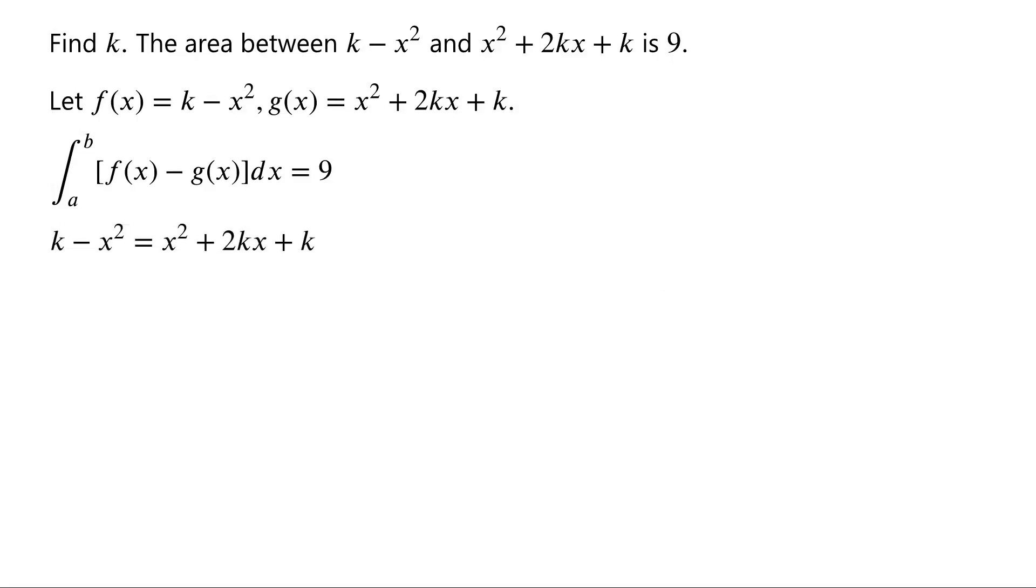That is, k minus x squared equals x squared plus 2kx plus k. k on the left hand side of the equation and that on the right hand side of the equation cancel. Rearrange the equation, we have 2x squared plus 2kx equals 0. Divide the equation by 2, we have x squared plus kx equals 0.